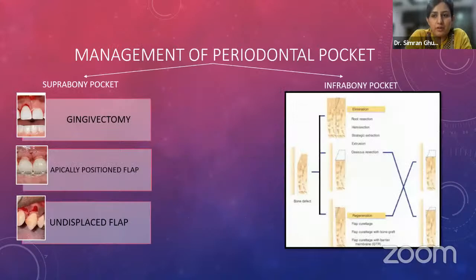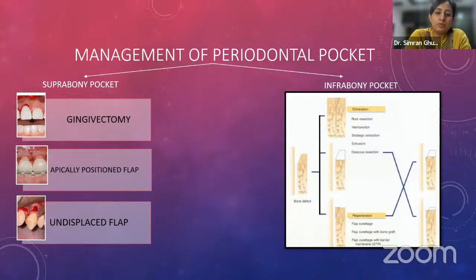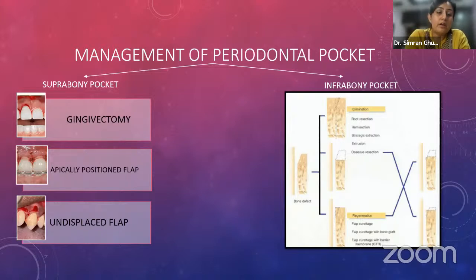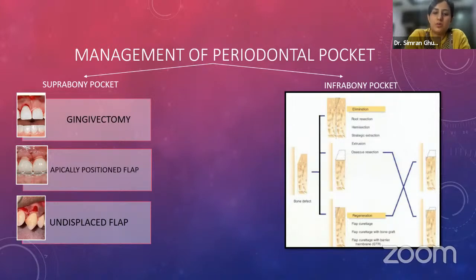Once a periodontal pocket is established as either suprabony or infrabony, treatment options are determined. For suprabony pockets, treatment options include gingivectomy, apically positioned flap, and undisplaced flap for complete pocket elimination. Management of infrabony pockets is a separate section.